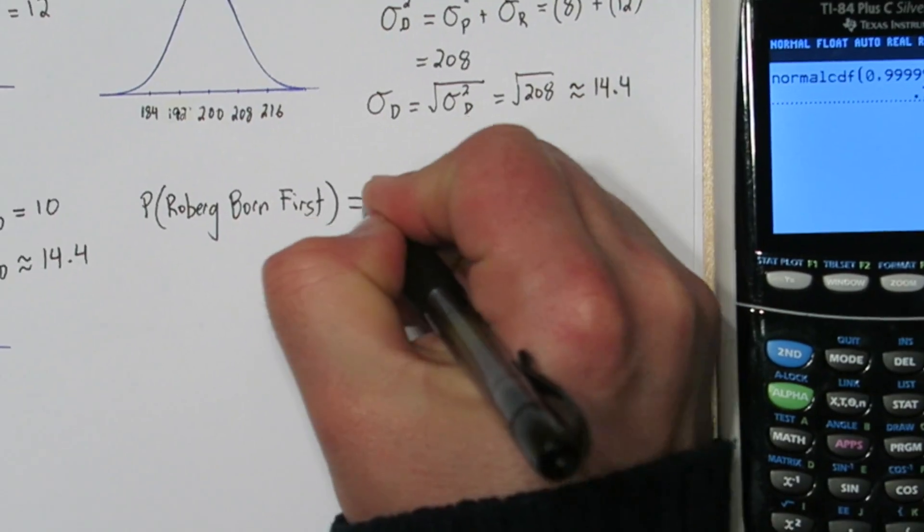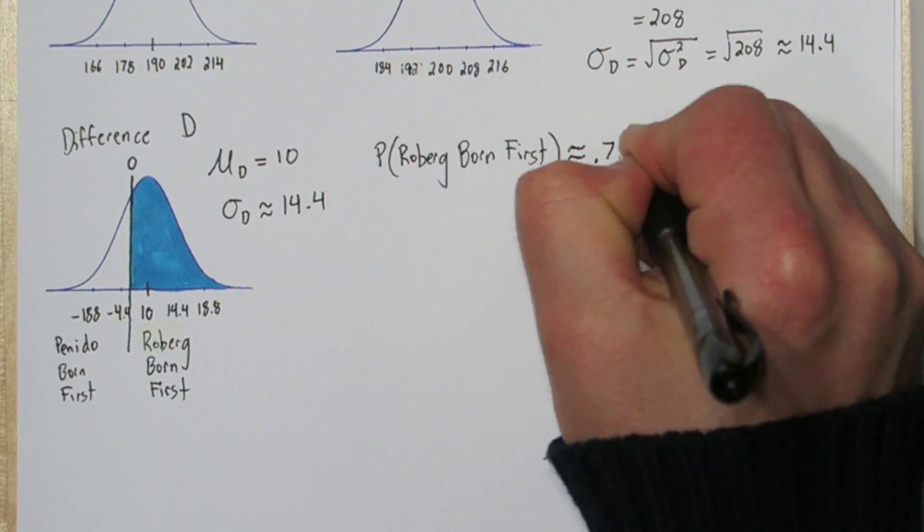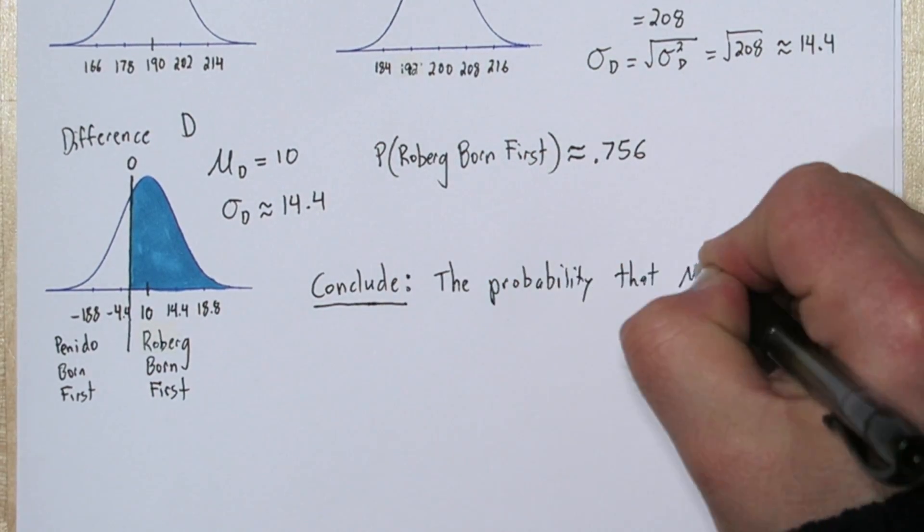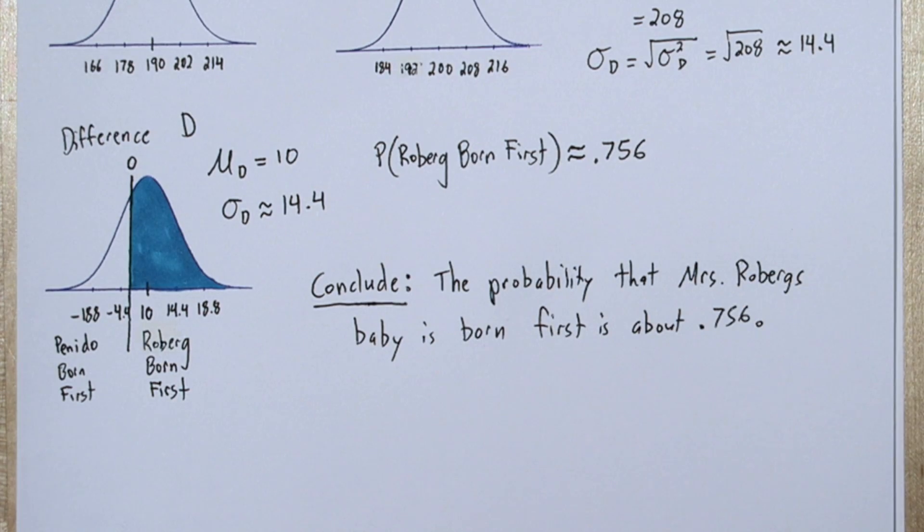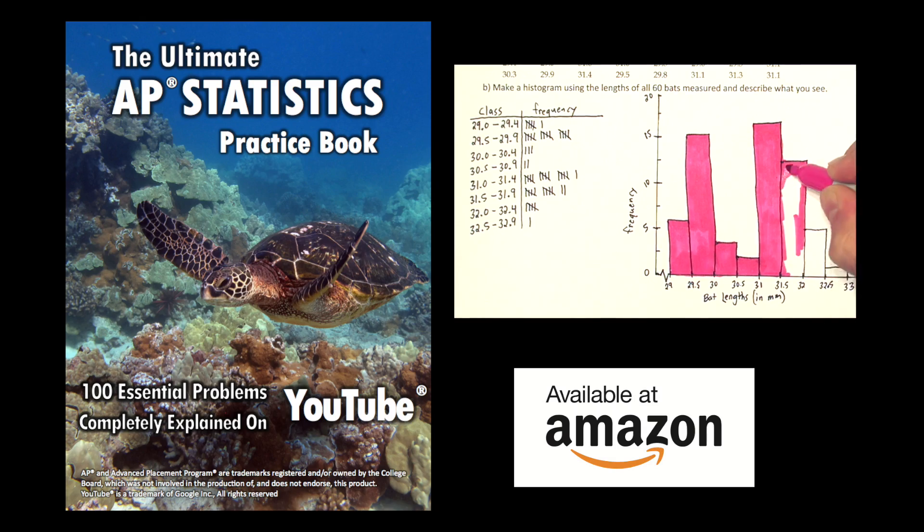Now we're ready to conclude. The probability that Mrs. Roeberg's baby is born first is about 0.756.